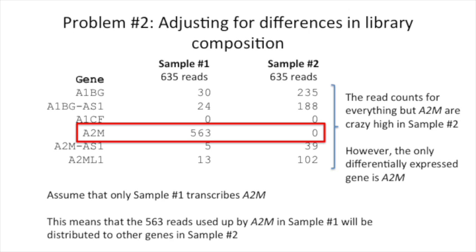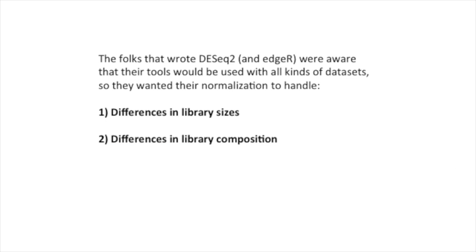Because sample number two does not transcribe A2M, all of the other genes get the read counts that would have gone to it, and this makes those read counts larger. The folks that wrote DESeq2 and EdgeR were aware that their tools would be used with all kinds of datasets, so they wanted their normalization to handle one, differences in library sizes, and two, differences in library composition.